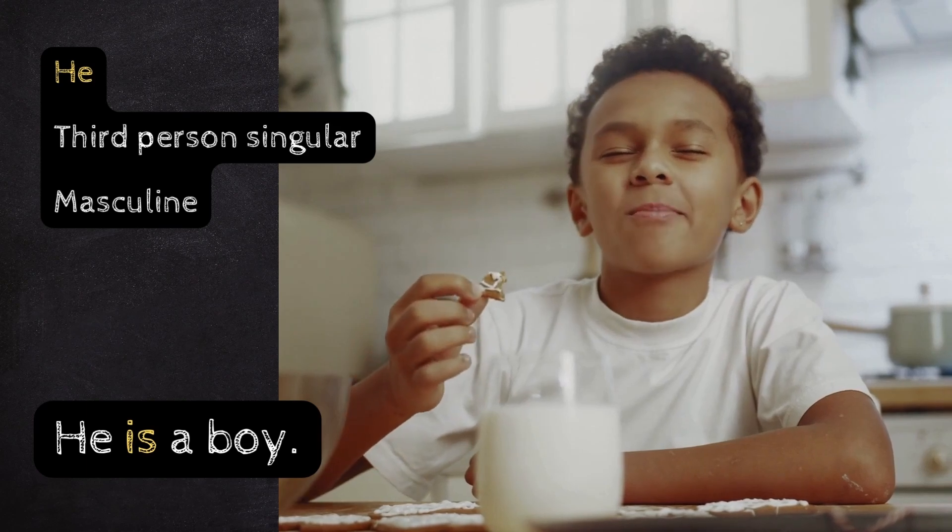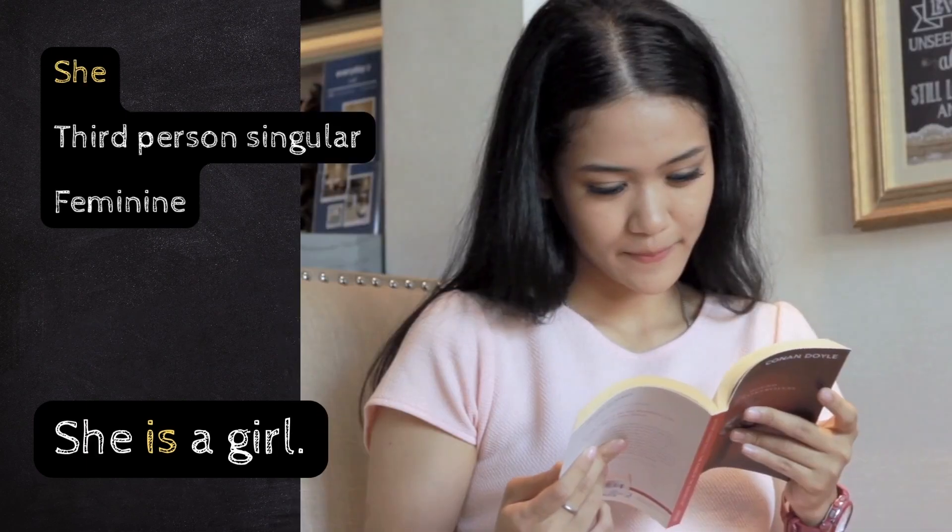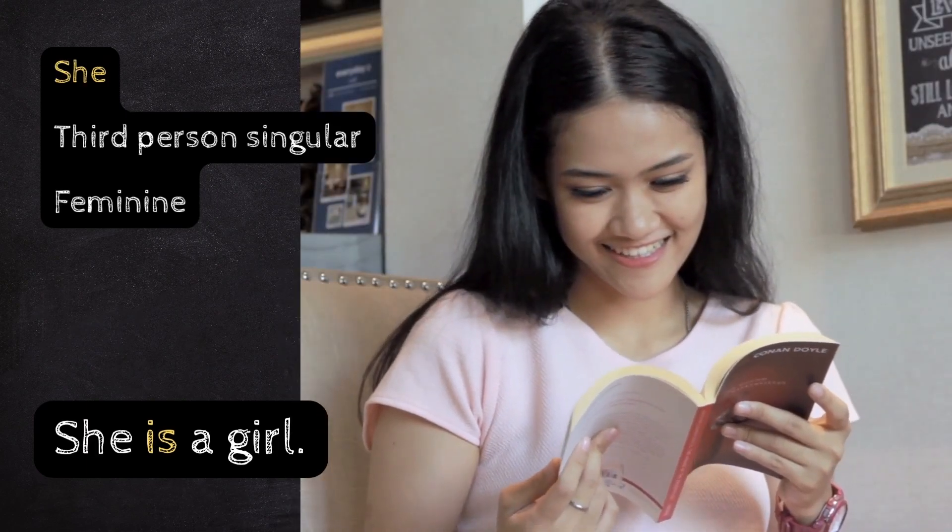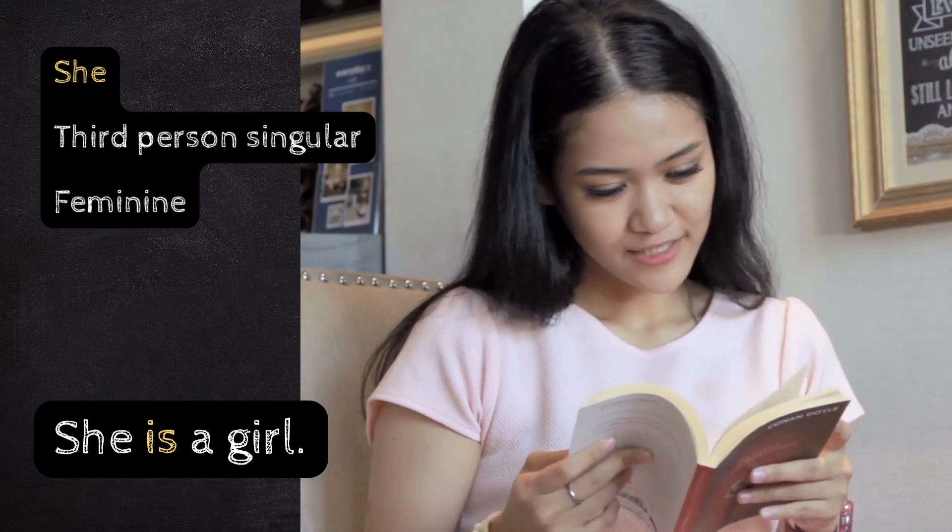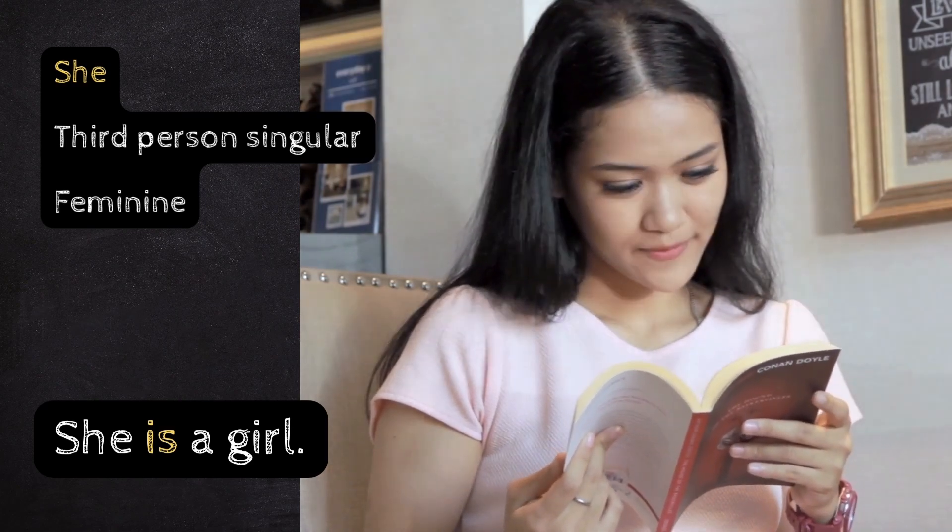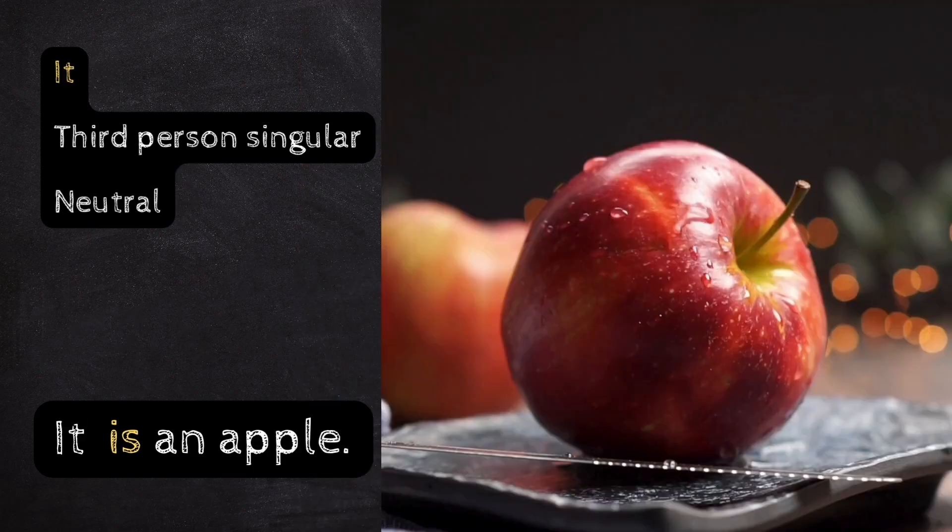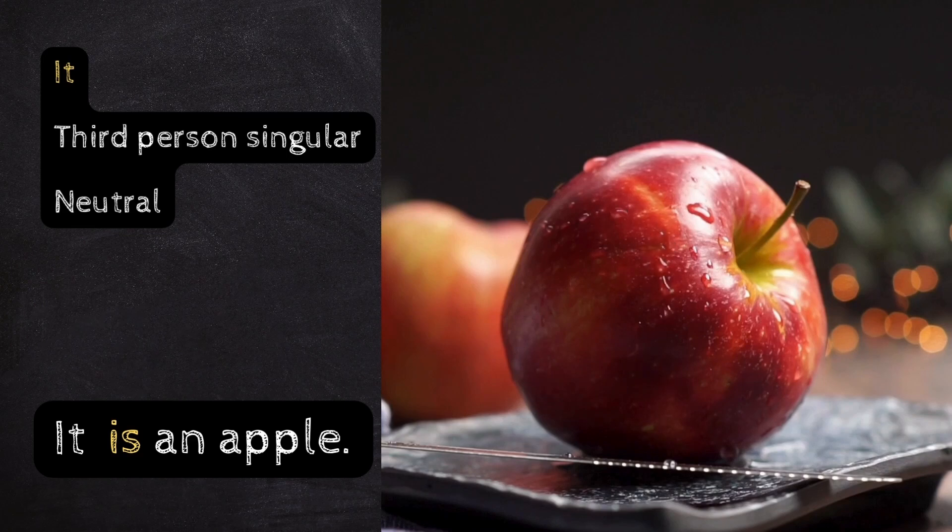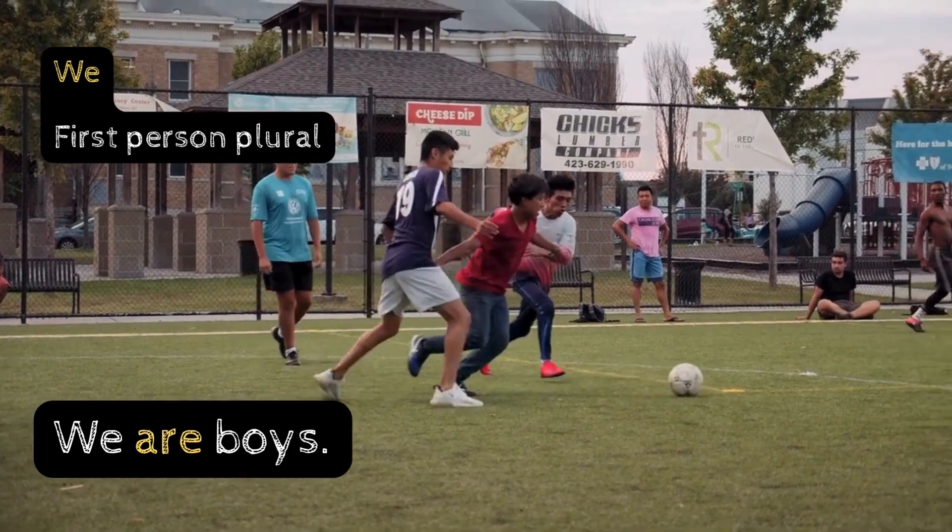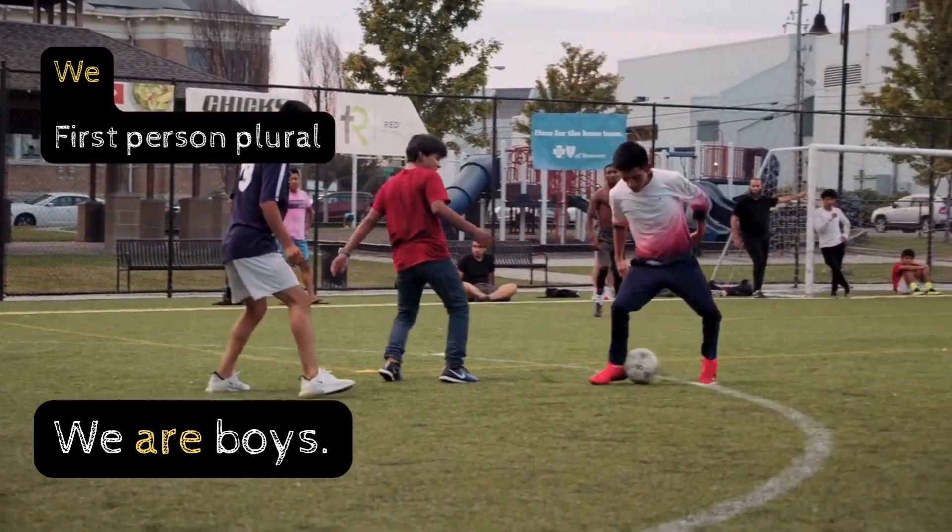He - Third Person Singular. He is a boy. She - Third Person Singular. She is a girl. It - Third Person Singular Neutral. It is an apple.